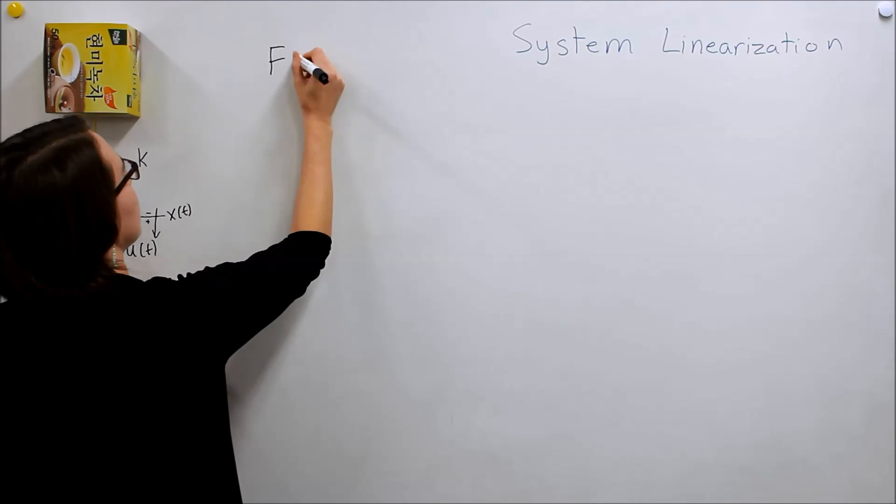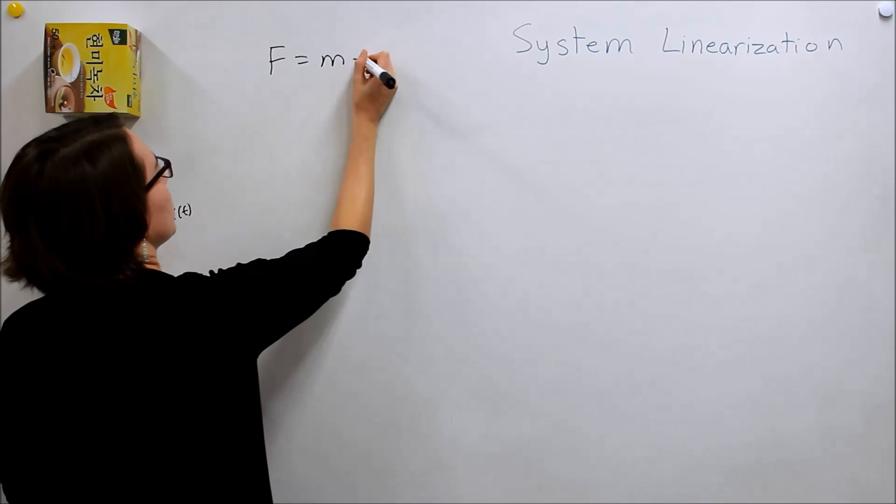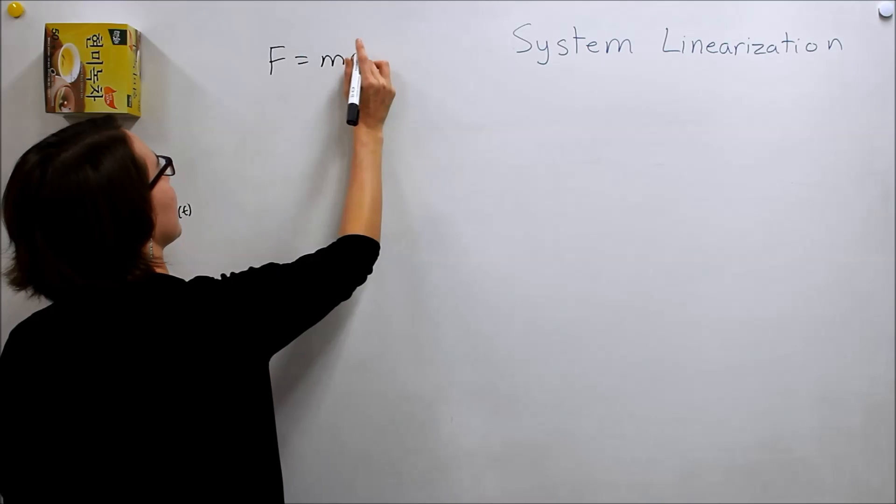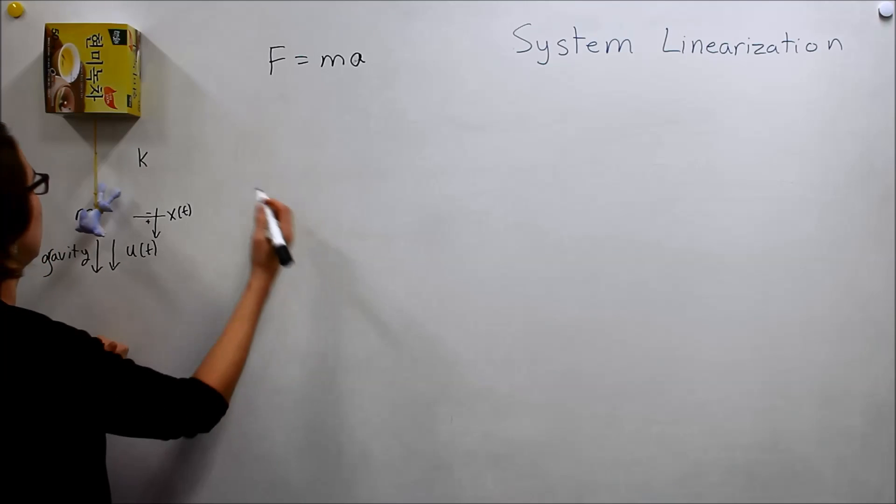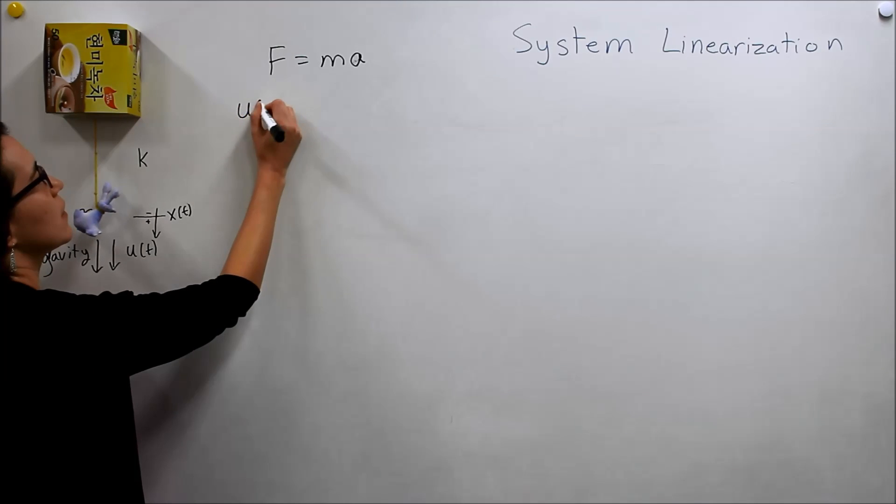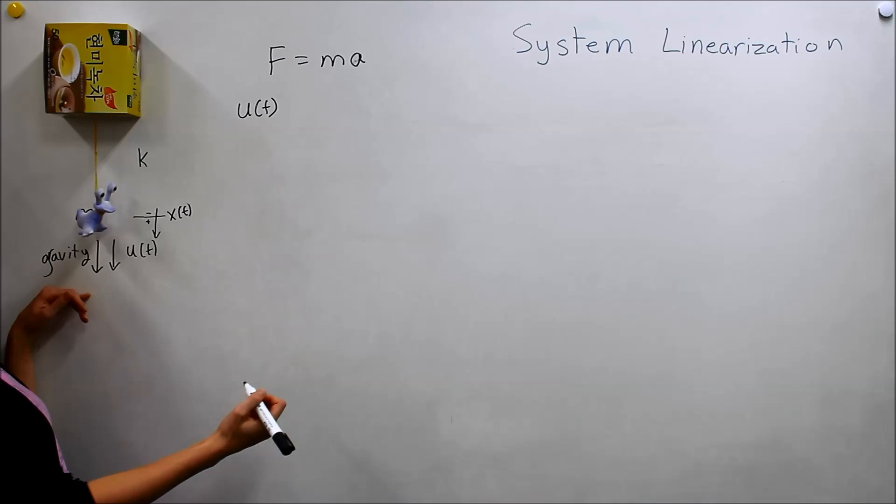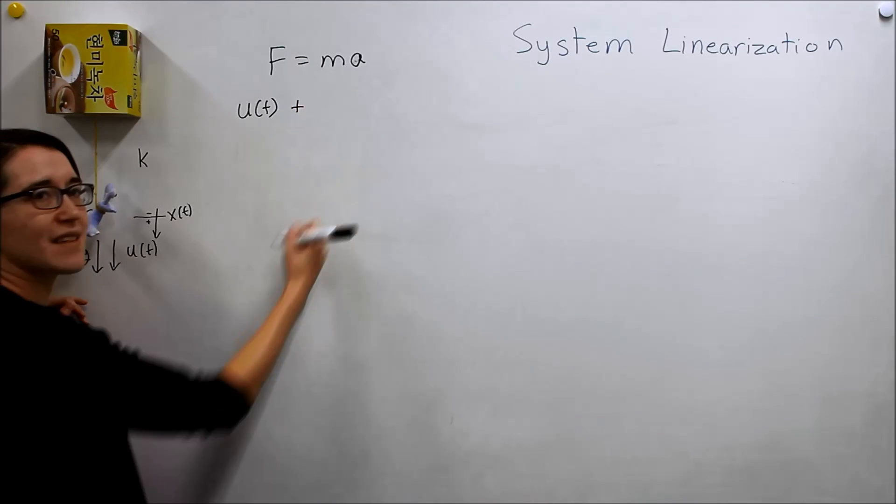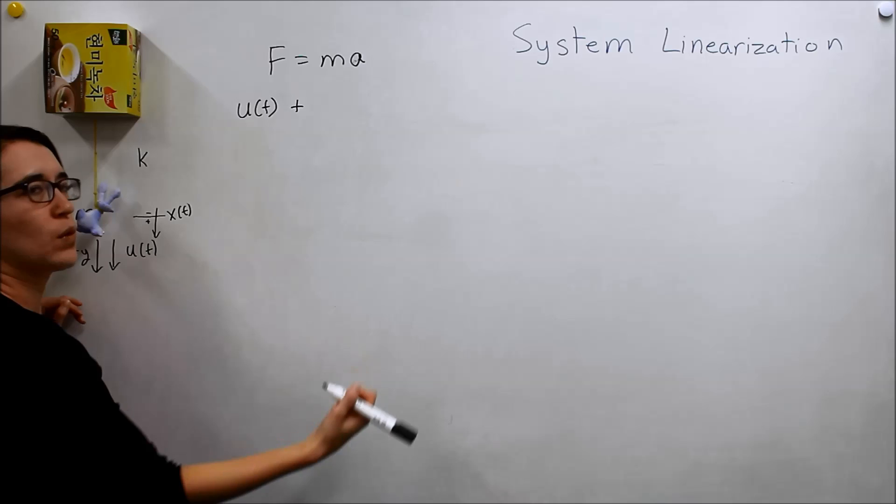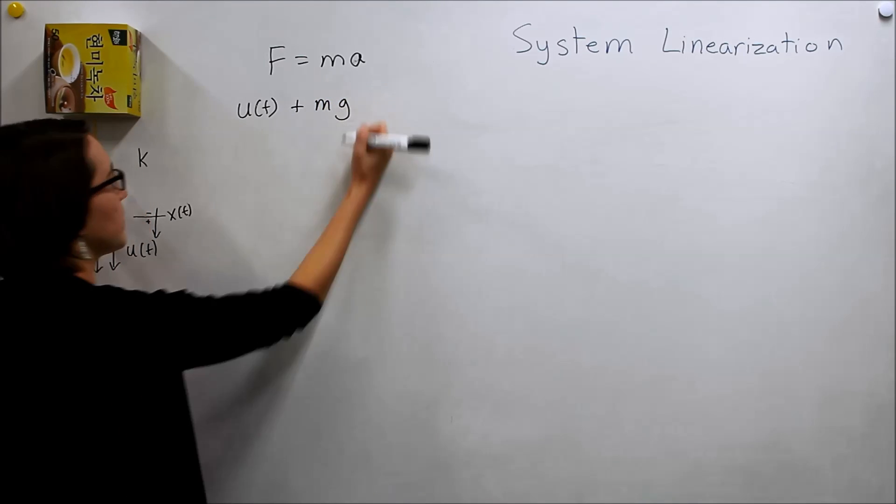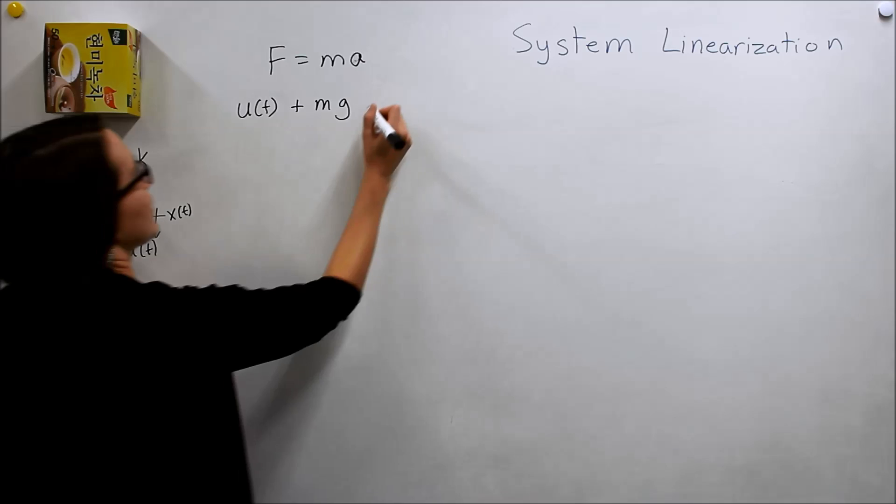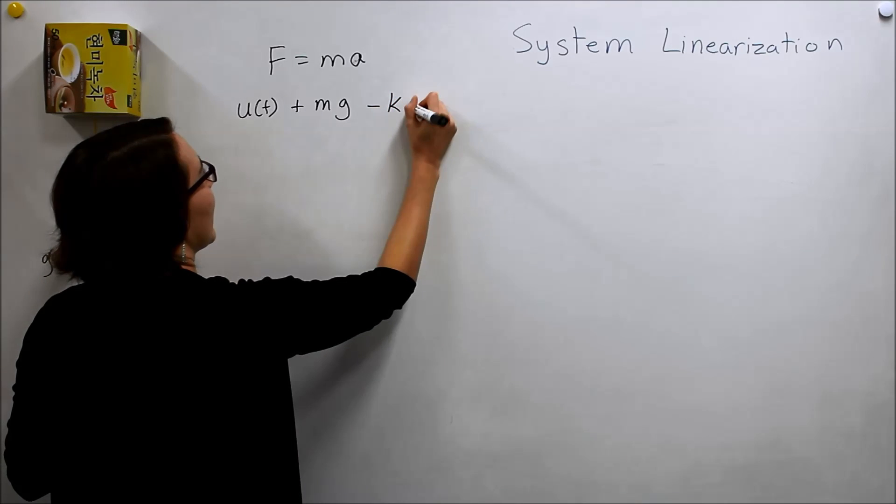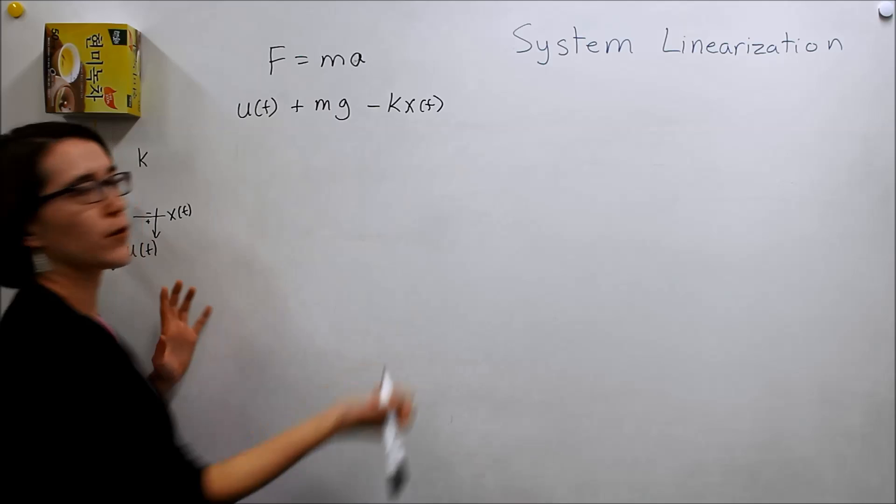So, this is our equation that determines the dynamics of the system. So, let's look at the forces that are on Valerie. One, we have input, u of t. That's one. And then we have gravity. With that, we just use the mass times the acceleration due to gravity, which we'll just call g. So, mg. But then we also have the force of the spring pulling back up in the negative direction. So, that'll be negative kx of t.